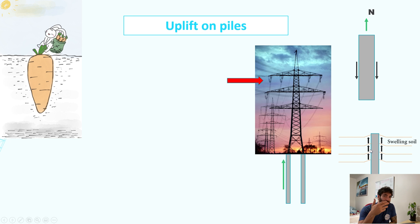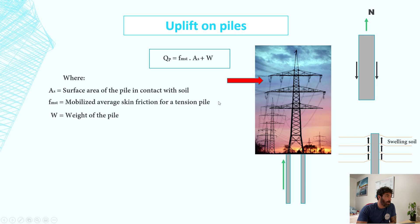Reactive soils may cause uplift loading on piles. The soil swells and lifts the pile up. The uplift capacity of piles is given by skin friction times the surface area of the pile in contact with soil plus the self-weight of the pile.